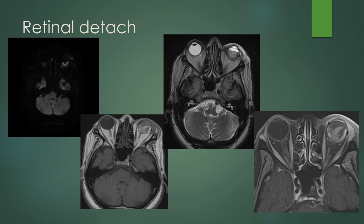For somebody with acute onset of vision loss, always look for a retinal detachment. On DWI you can see restricted diffusion within blood products. On T1, you can see heterogeneously hyperintense T1 signal within the vitreous with a wavy or folded appearance. On T2, it has areas of hyperintense and isointense T2 signal within the vitreous. On post-contrast images, you have that wavy appearance of hemorrhage and retinal detachment.